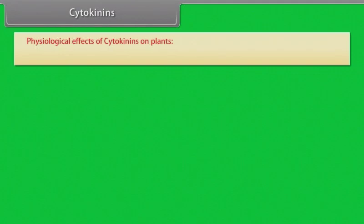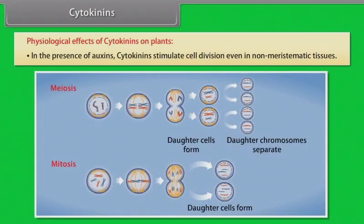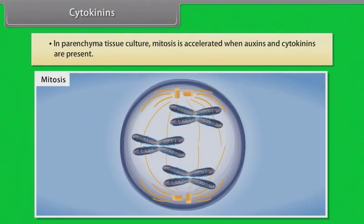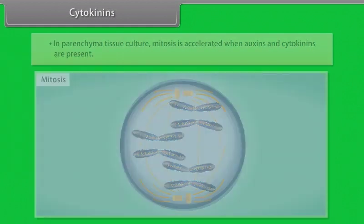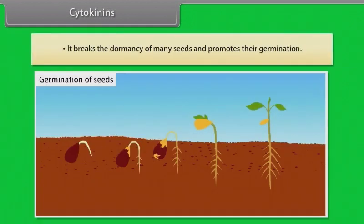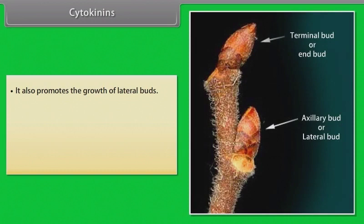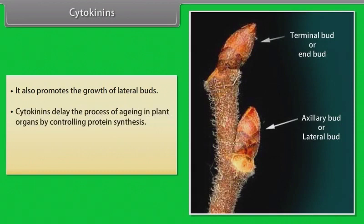Cytokinins: Physiological effects of cytokinins on plants — in the presence of auxins, cytokinins stimulate cell division even in non-meristematic tissues. In parenchyma tissue culture, mitosis is accelerated when auxins and cytokinins are present. It breaks the dormancy of many seeds and promotes their germination. It also promotes the growth of lateral buds. Cytokinins delay the process of aging in plant organs by controlling protein synthesis. It also helps in accumulation of salts in plant cells.